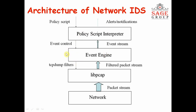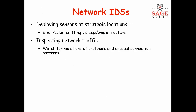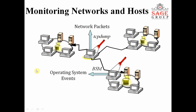The event engine controls the TCP dump filter. This is the packet capture library. Our network uses a stream packet which is generally a library package. The event engine reports events, and when it comes to the event controller, the policy script is downloaded. The TCP dump filter then works. We have seen this architecture diagram before — TCP dump.